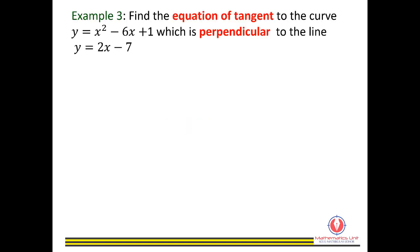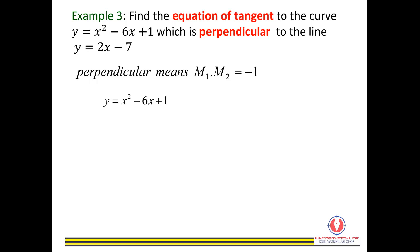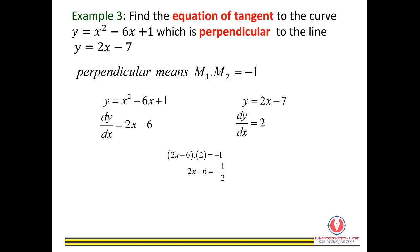Example 3: find the equation of tangent to the curve y equals x squared minus 6x plus 1, which is perpendicular to the line y equals 2x minus 7. Perpendicular means m1 times m2 equals negative 1. Differentiate the curve to get 2x minus 6; this is m1. Differentiate the line to get 2; this is m2. Since they are perpendicular, we set (2x minus 6) times 2 equals negative 1. Rearrange to get x equals 11 over 4.